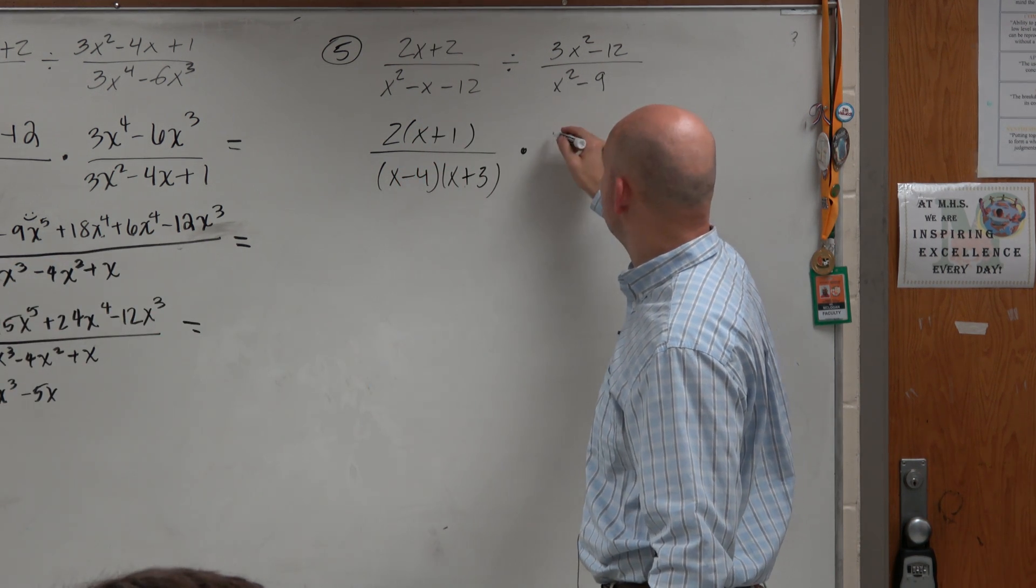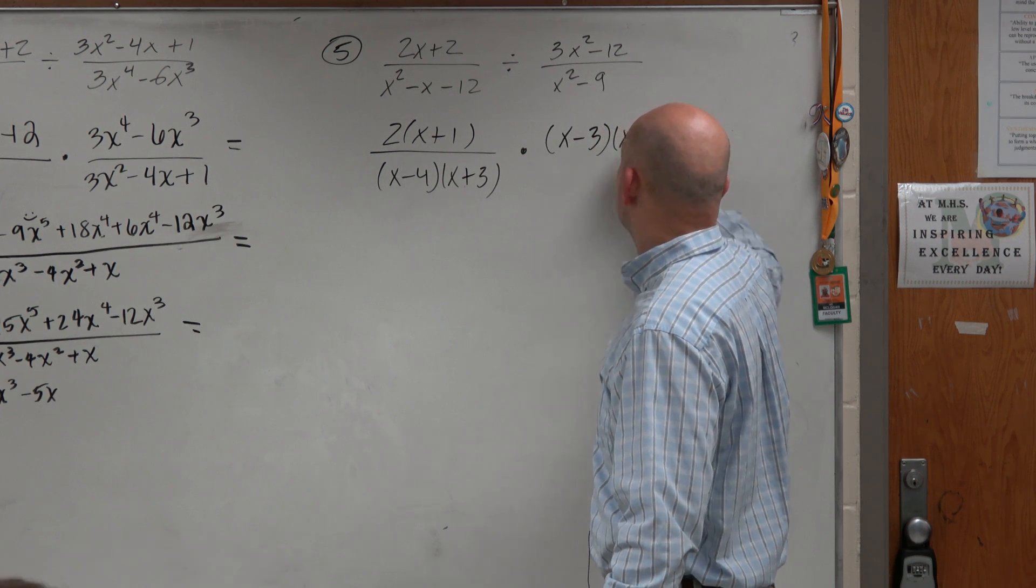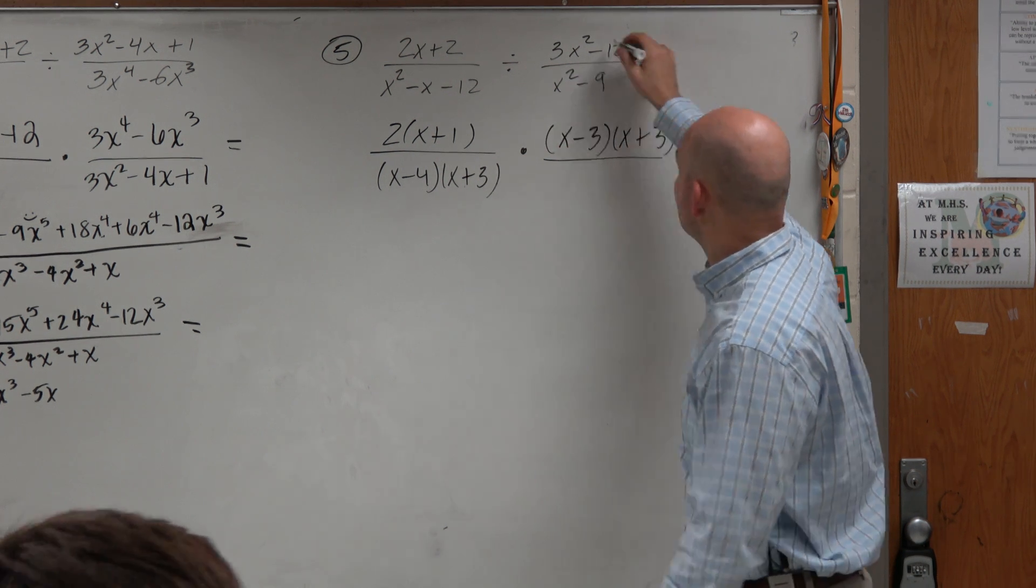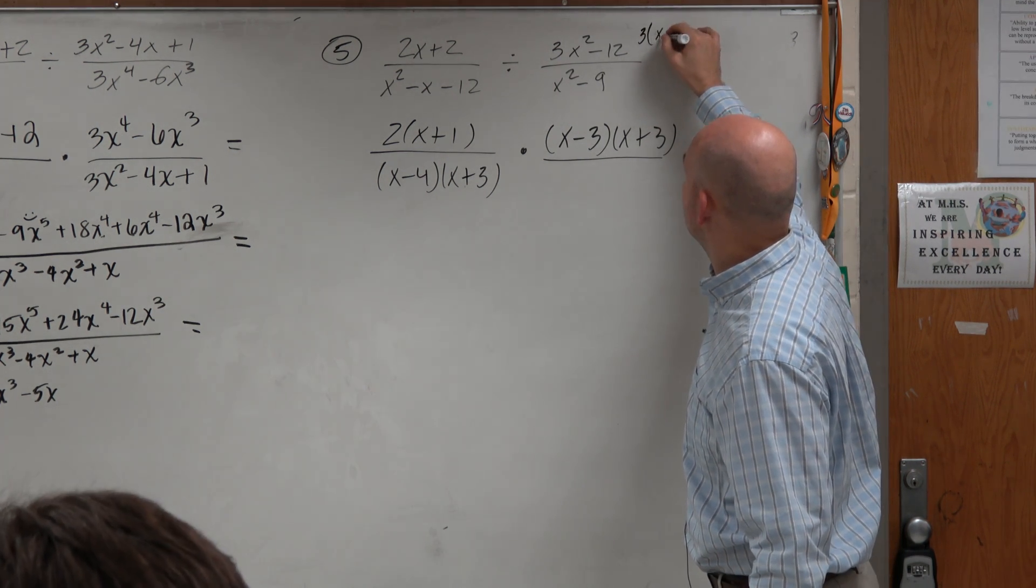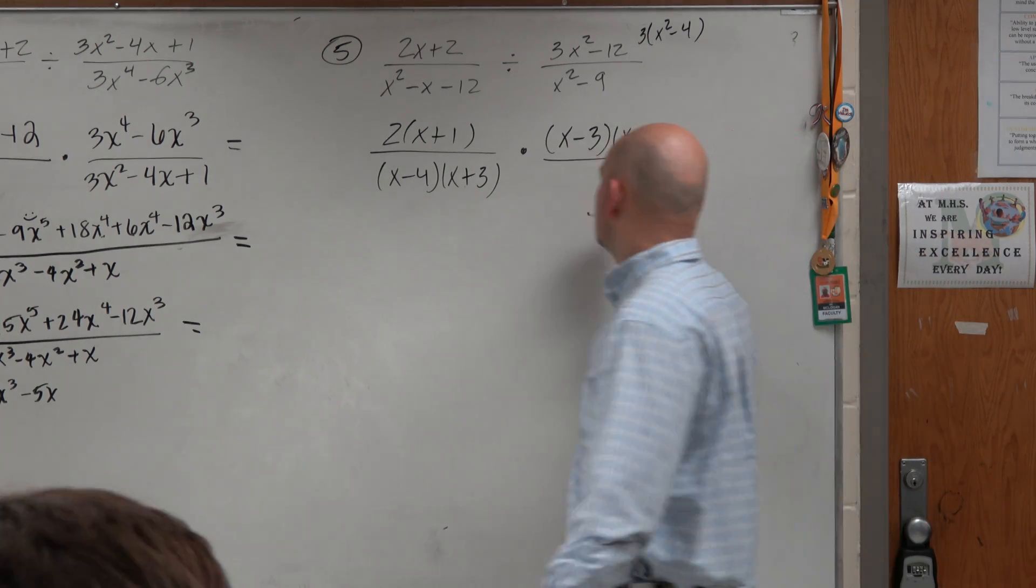Write this as a product - that means that's going to be my new numerator, which is a difference of two squares. And here, if I factor this out, if I factored out a 3, I would get an x² - 4, which again, I could use a difference of two squares again, right?